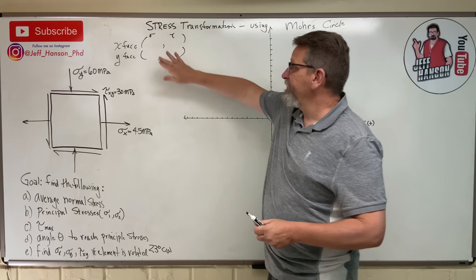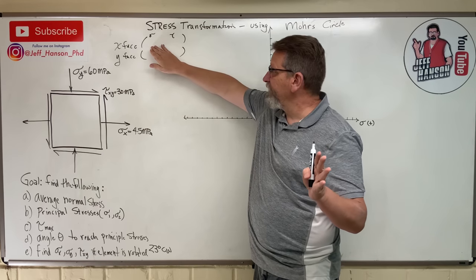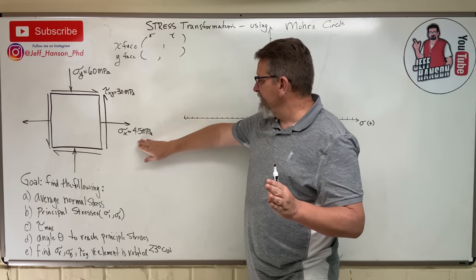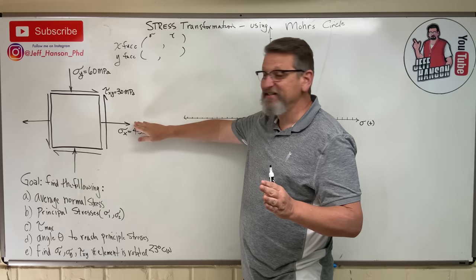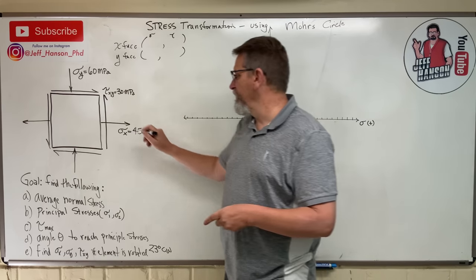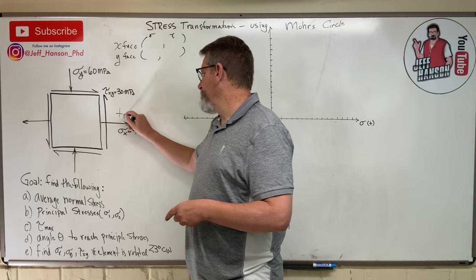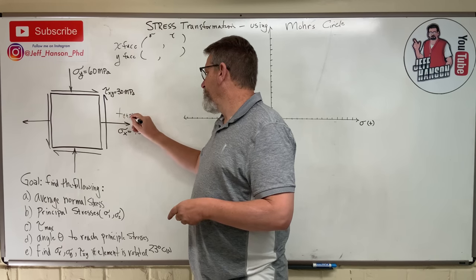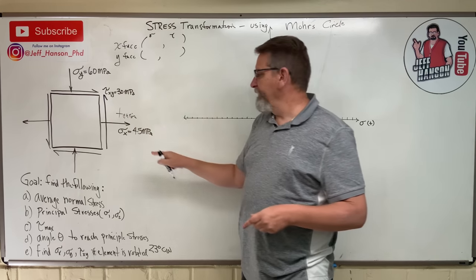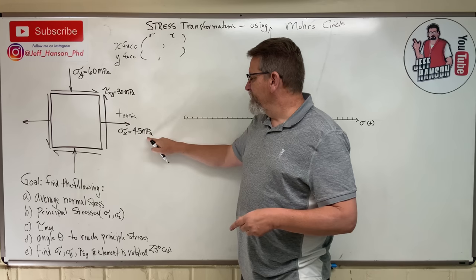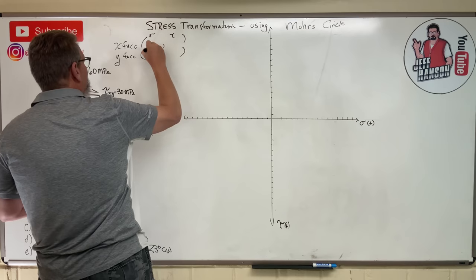Let's get the coordinates from the x-face. Sigma on the x-face is 45, and that's in tension. Tension is positive, so this is positive 45. For the y-face sigma value, that's in compression — compression is negative — so negative 60.